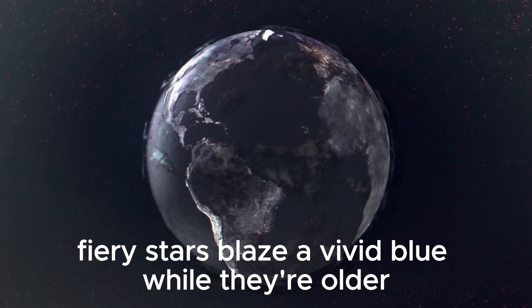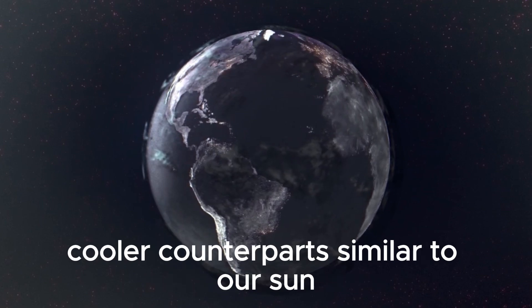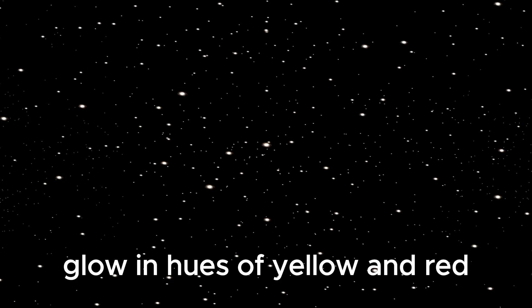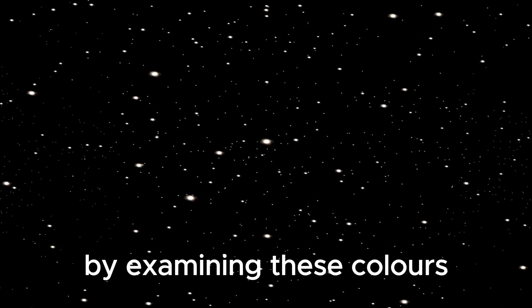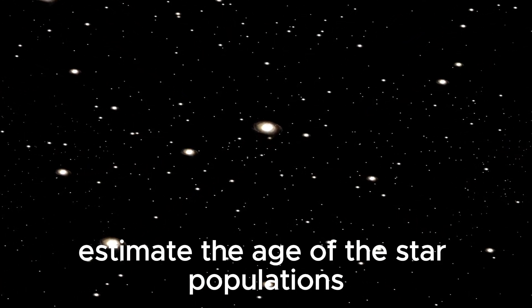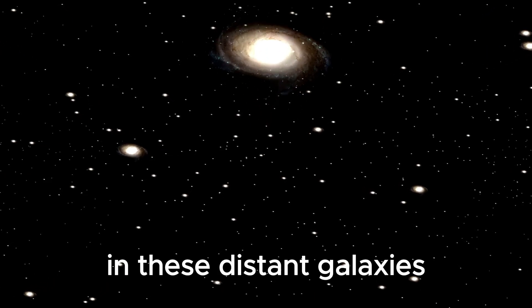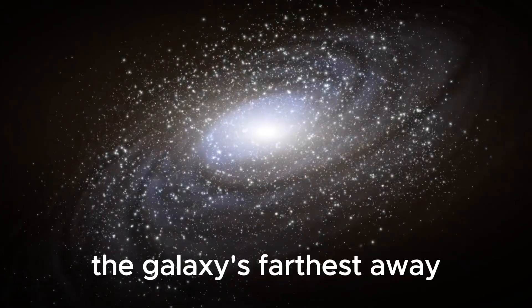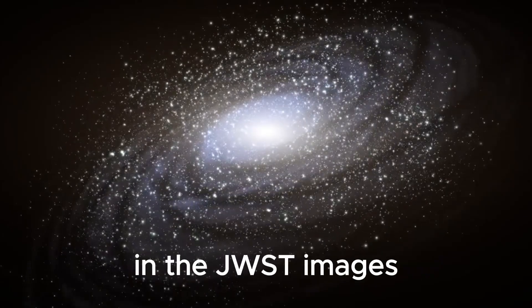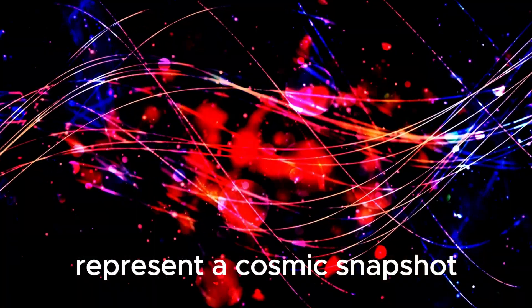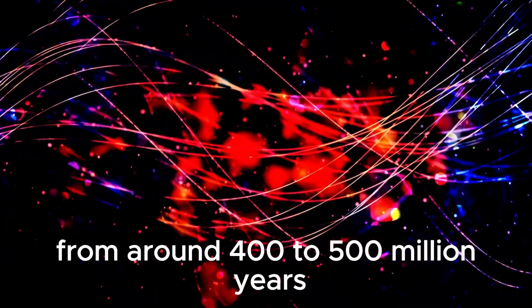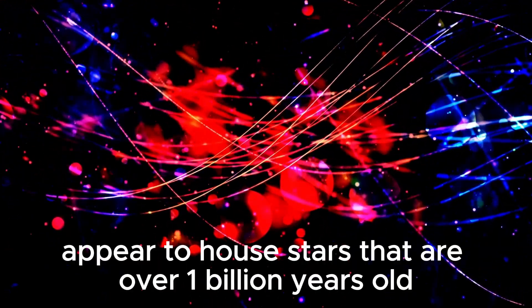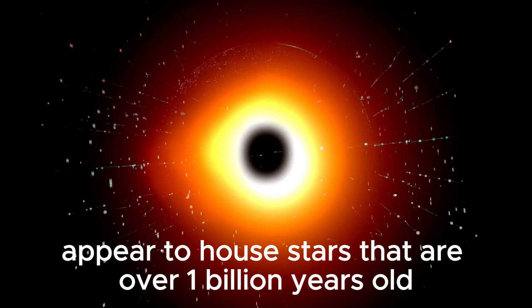These colors aren't just beautiful. They're telling a story about the age of the stars in these galaxies. Young, fiery stars blaze a vivid blue, while their older, cooler counterparts, similar to our sun, glow in hues of yellow and red. By examining these colors, astronomers can estimate the age of the star populations in these distant galaxies. According to the Big Bang theory, the galaxies farthest away represent a cosmic snapshot from around 400 to 500 million years after the universe's birth.